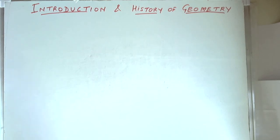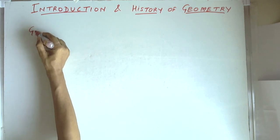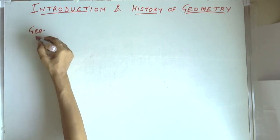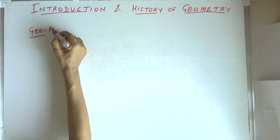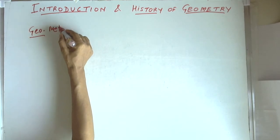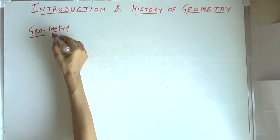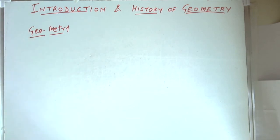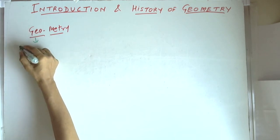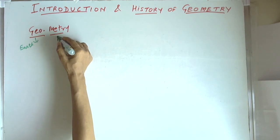The word geometry comes from two words: Geo means earth and metry means measurement.